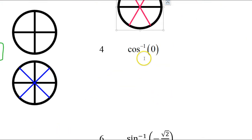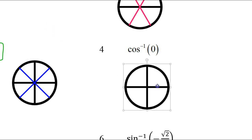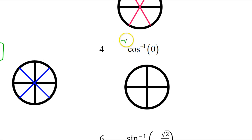Inverse cosine is just an angle — it's the angle whose cosine is 0. That is going to be a quadrantal angle. What angles have a cosine of 0? Remembering that cosine is the x value on the unit circle — where are the x values 0?